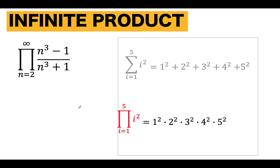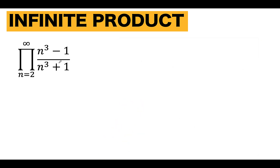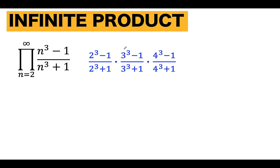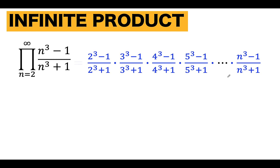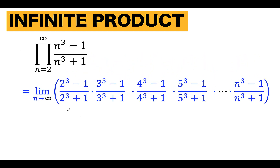Going back to our problem, how do you find this infinite product? To have an idea, let's take n equals 2, which gives 2 cubed minus 1 over 2 cubed plus 1. When n equals 3, that is 3 cubed minus 1 over 3 cubed plus 1, and we are getting the product. For n equals 4, n equals 5, and so on, we continue multiplying until n approaches infinity. Therefore, this is a limit problem — we want to find what the limit of this sequence of products is as n approaches infinity.